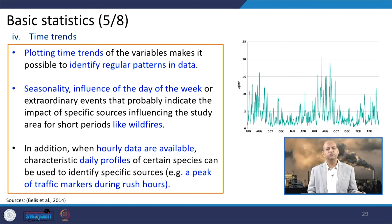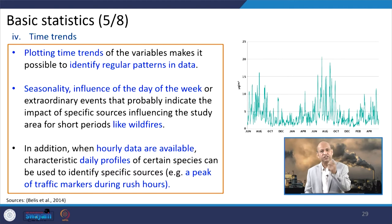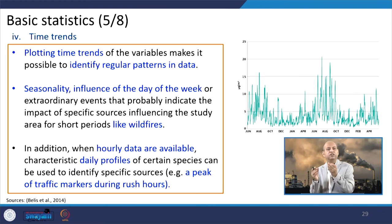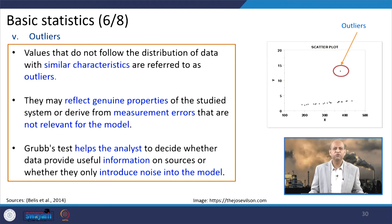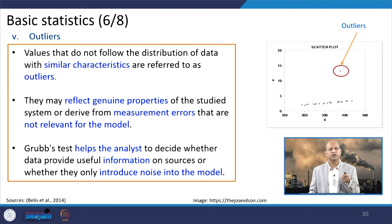Time series analysis is also very important. Plotting time trends makes it possible to identify regular patterns in data — whether values are decreasing or increasing, and whether peaks occur and why, such as from a local source active during a particular time period. Outliers are values outside the normal variation; they may reflect genuine system properties or measurement errors not relevant to the model, and by basic analysis these can be found and removed to avoid wrong inferences.